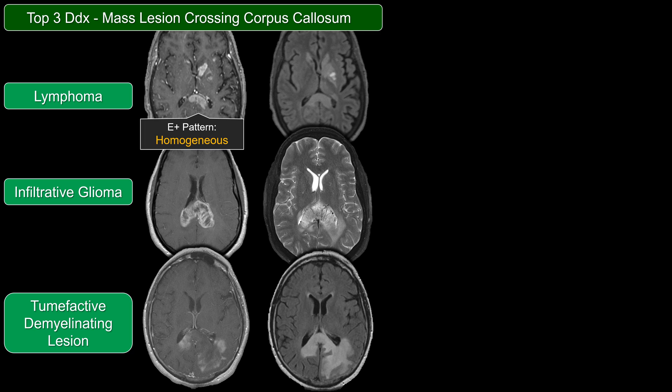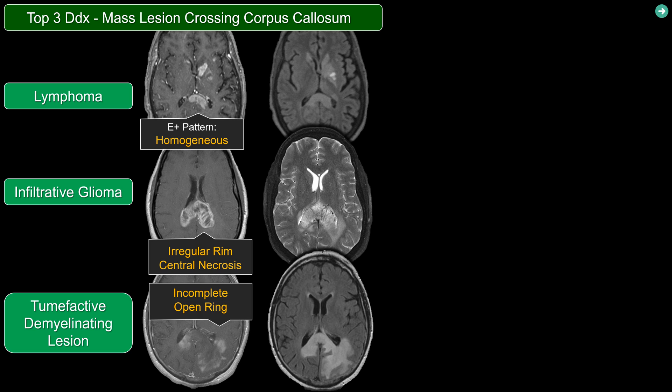Notice that there is a second lesion in the left basal ganglia that also shows homogeneous enhancement. That is very different from GBM, which tends to show this ugly, thick rim enhancement with quite a bit of central necrosis. On the other hand, the classic enhancement pattern for a demyelinating lesion is this incomplete, lacy, open rim enhancement.